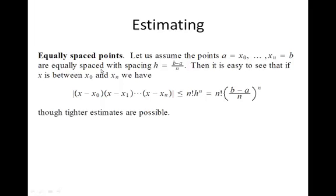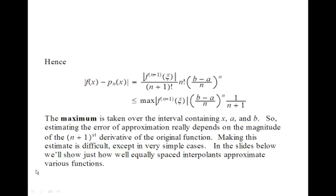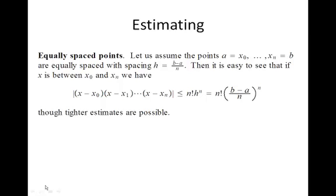So at this point, we're going to assume that the points are equally spaced. And the spacing is going to be (b minus a) over n. Then it's easy to see that between x0 and xn we have this product from the theorem on the previous page, is bounded by n factorial h to the n, which is given by this quantity, n factorial times the quantity (b minus a over n) raised to the nth power.